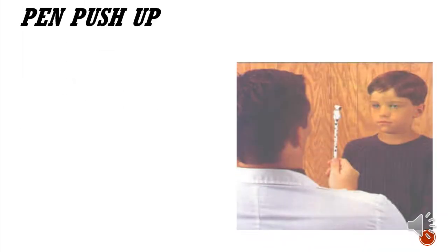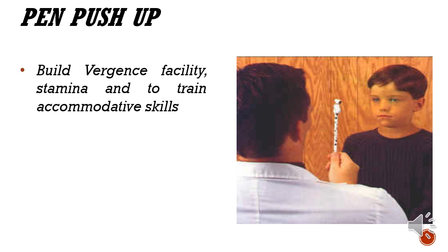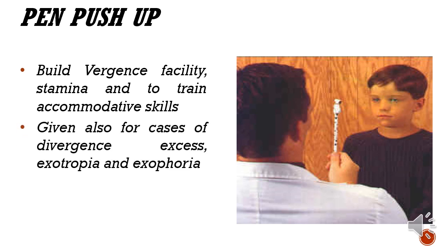Pen push-up is used to build vergence facility and stamina and to train accommodative skills. Both accommodation and vergence work simultaneously because when a target is very near, you not only converge but also use accommodation to keep it clear. We ask the patient to keep a pencil single and bring it as close as possible - the moment it doubles, move it away and then bring it close again. This relaxes and re-stimulates convergence, exercising the medial rectus muscle. It is given for divergence excess, exotropia, and exophoria.